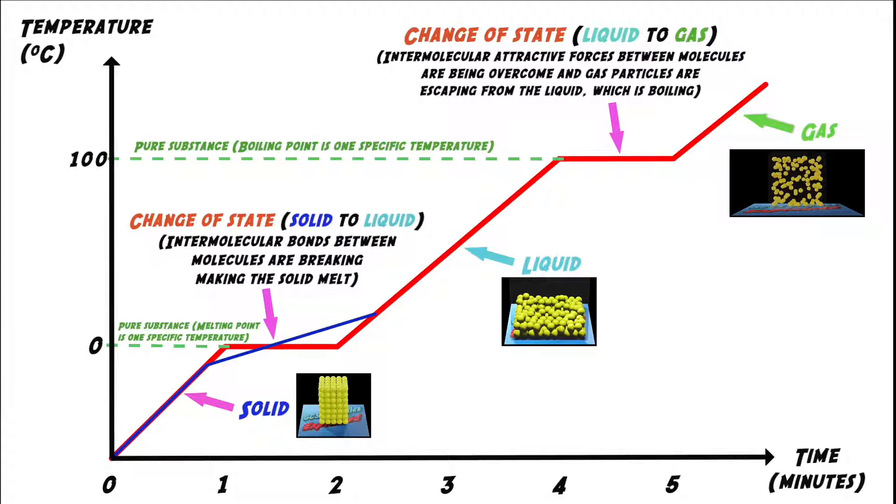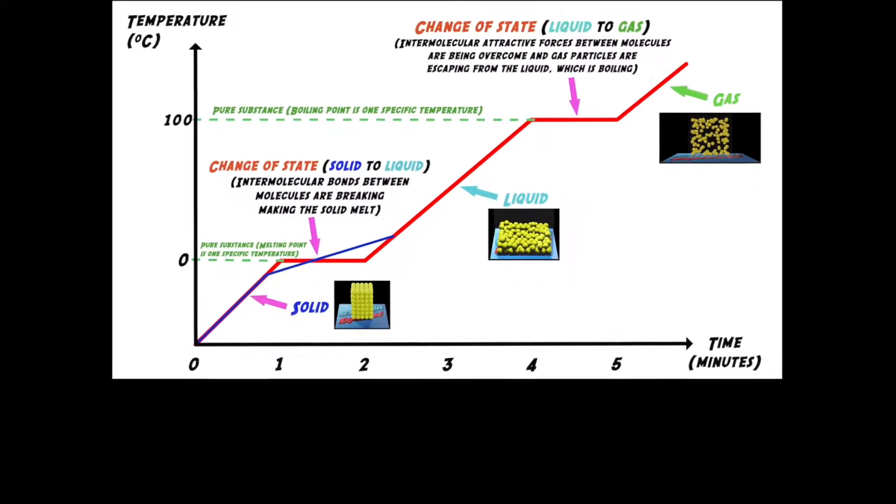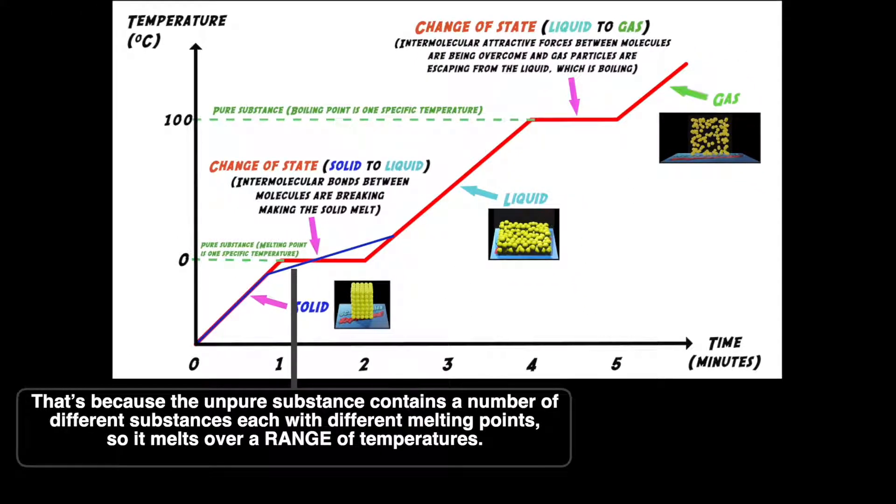What I want you to notice is that the flat section is not as flat as it was for the pure substance. That's because the unpure substance contains a number of different substances, each with different melting points. So it melts over a range of temperatures.